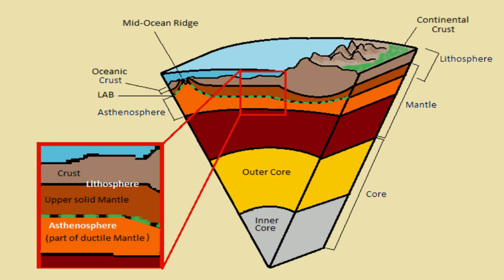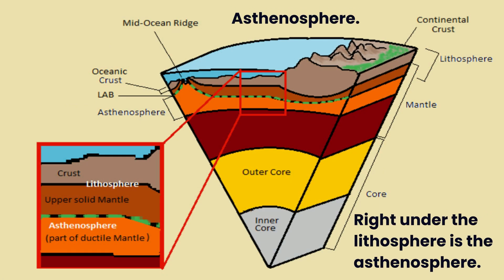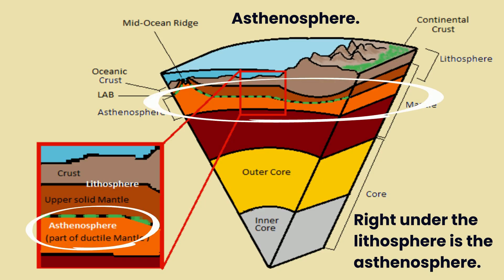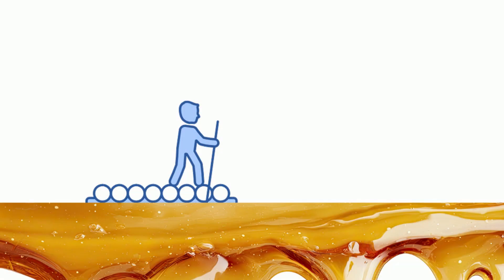The asthenosphere is found right underneath the lithosphere. This layer is still solid rock, but it behaves more like warm, bendable plastic. The asthenosphere flows very slowly, and the lithosphere rides on top of this. Think of it like a raft floating on thick, gooey syrup — kind of like molasses.